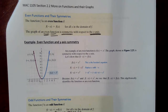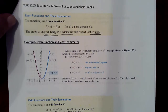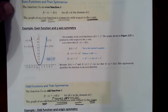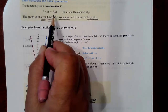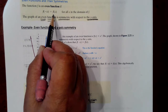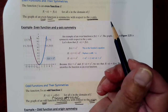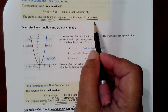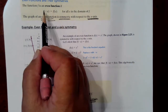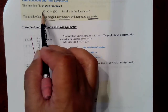This is a continuation of section 2.2 for MAC 1105. We were in the process of discussing symmetries. We had just finished discussing even functions and the test you perform, which is to plug in a negative x for x. If you get the original function back, then the function is said to be an even function, which has y-axis symmetry.